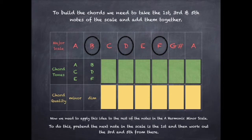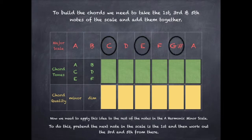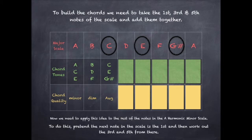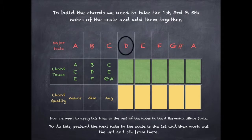Building a chord on the third scale degree, we take the third, the fifth, and the seventh notes — the C, the E, and the G sharp. When we put those three notes together, we end up with an augmented chord. To build a chord on the fourth scale degree, we take the fourth, the sixth, and the eighth notes of the scale — the D, the F, and the A.